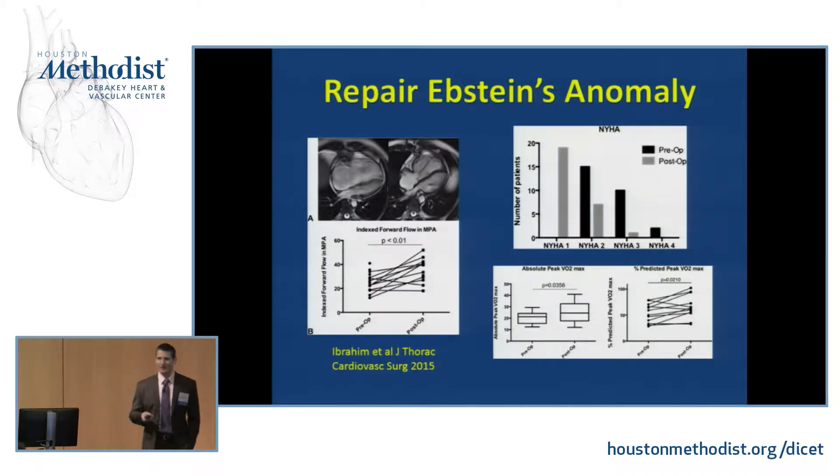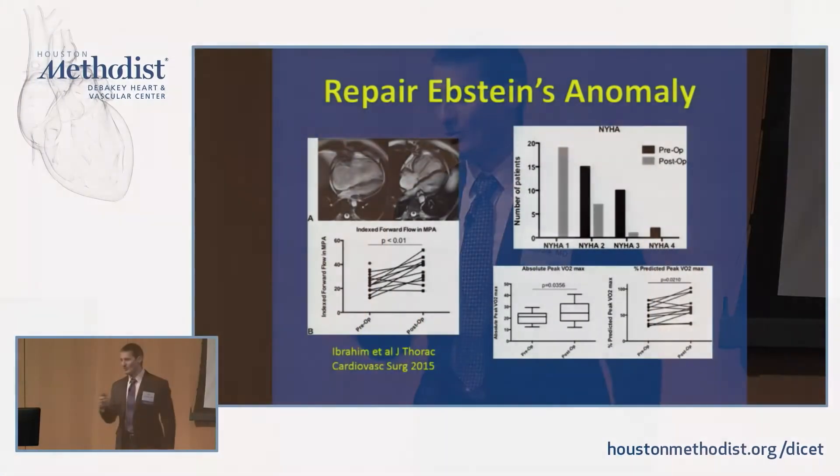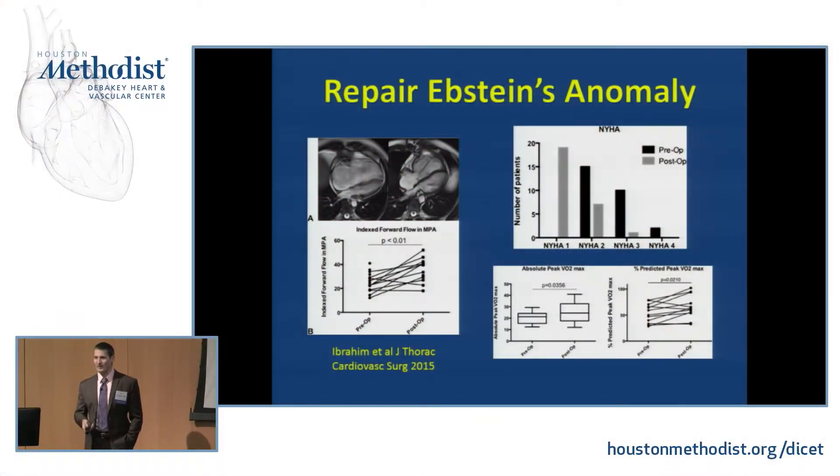What do we do in Ebstein's anomaly? Honestly, it's uncertain whether repair makes patients feel better — it makes me feel better because it seems to stop progression of a pathologic process. But because the atrialized portion of the ventricular myocardium is basically dysfunctional, even once reintegrated into the ventricle it doesn't add much to the ventricle's function. What you're mainly doing the repair for is to reduce tricuspid valve insufficiency.